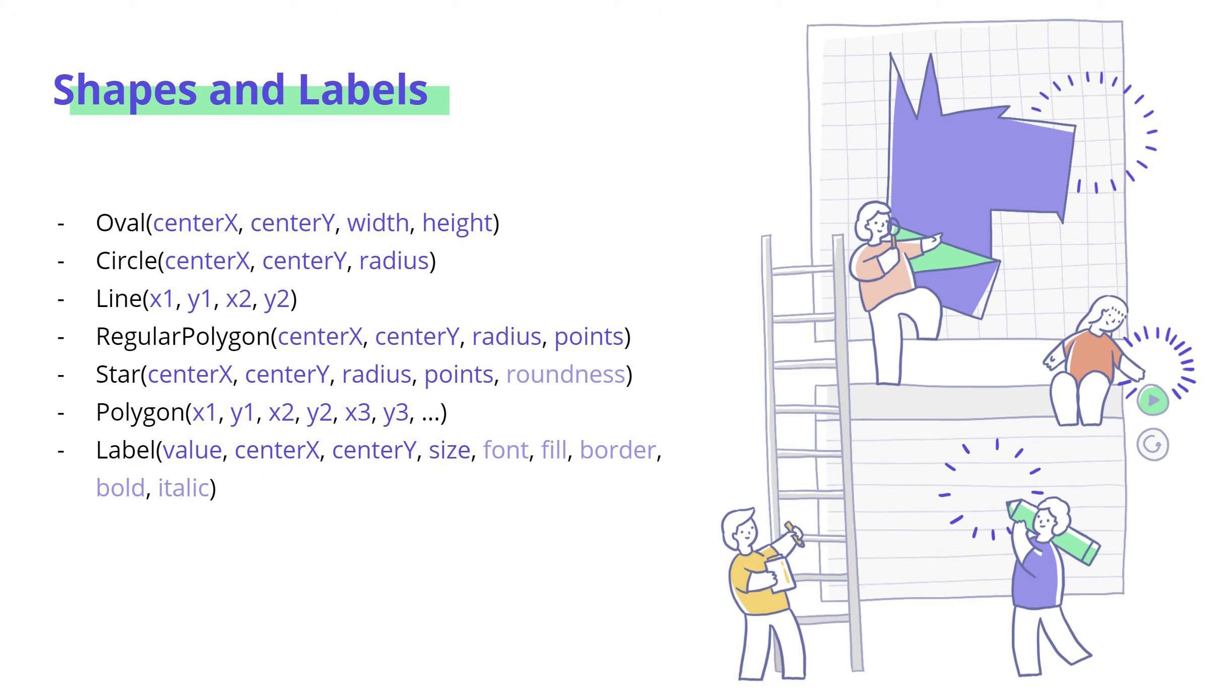We have line that takes in two points, x1, y1, and x2, y2, and connects the two of them. We have a regular polygon, which needs a center x, center y, a radius, and points. This behaves similarly to drawing hexagons, pentagons. You choose a center, how wide it's going to be, and the number of points that that shape has.